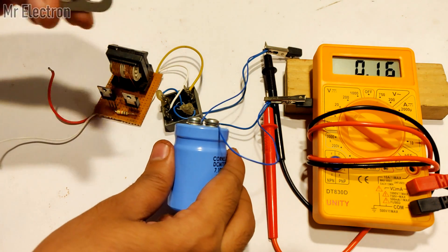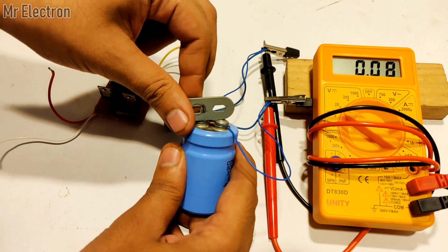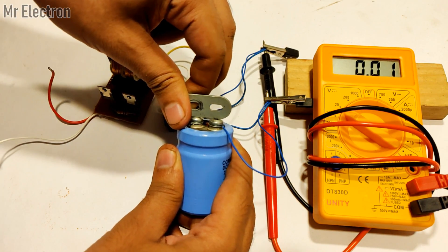As soon as I removed the metal with which I shorted the capacitor, the circuit started indicating some voltage, and not just that, the voltage started increasing slowly.